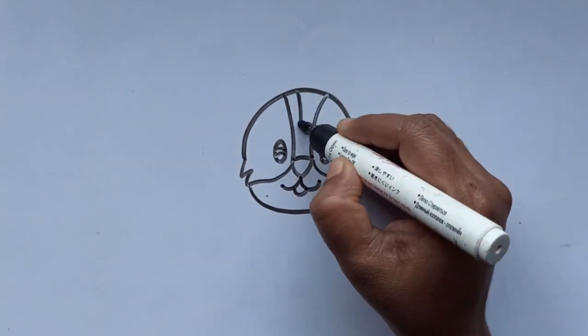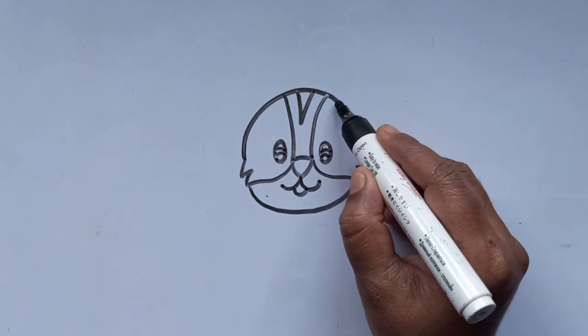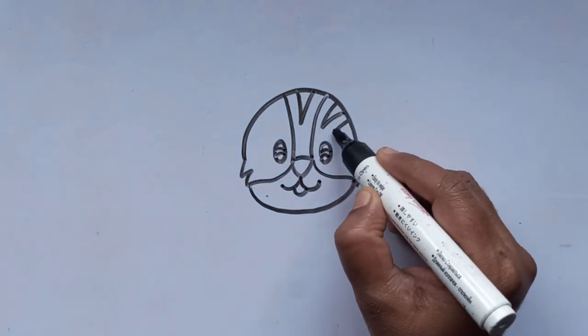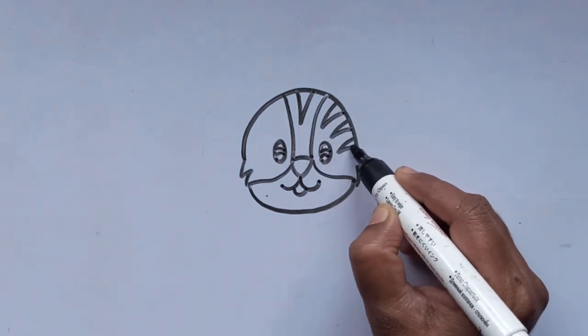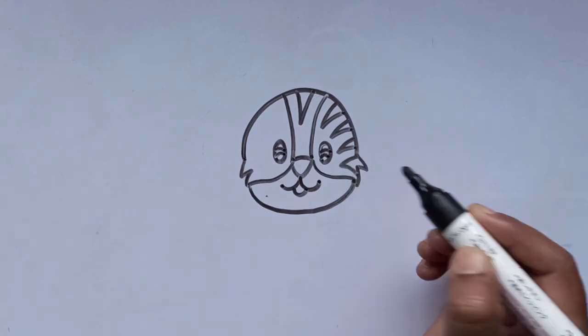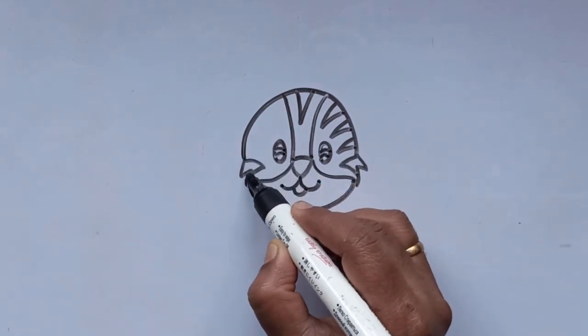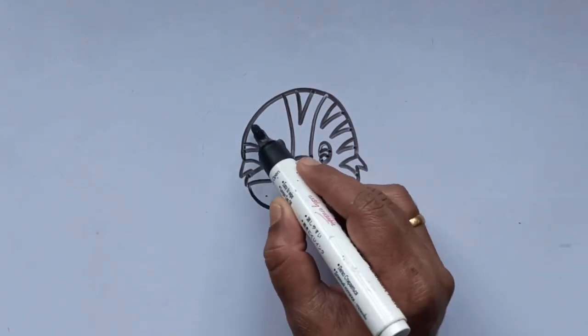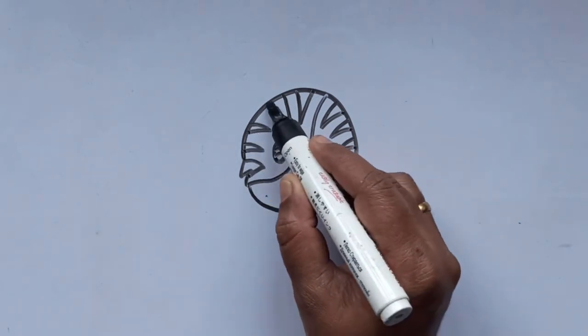Let's add stripes on the face. Do you know? Tigers have more than 100 stripes. Their stripes are much like a fingerprint because no two tigers are exactly alike.